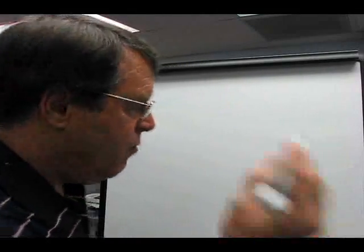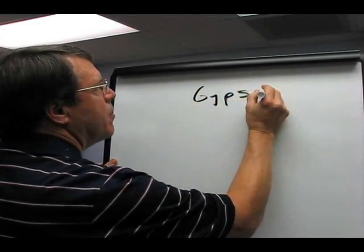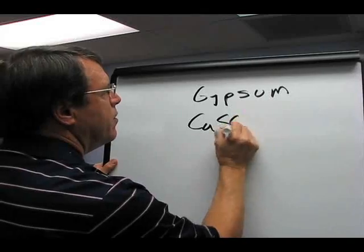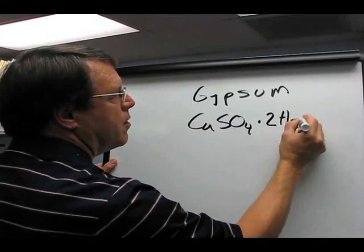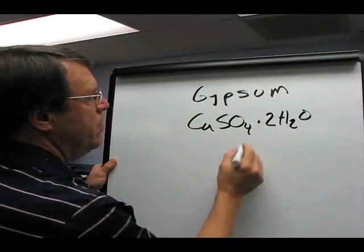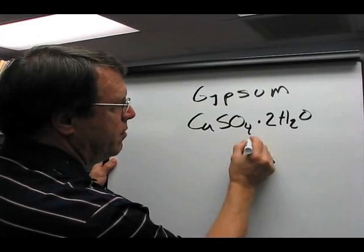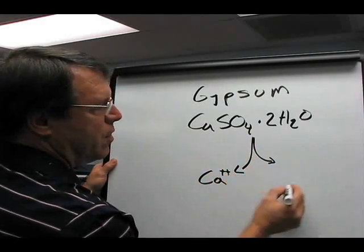Today I want to talk about some of the work we did with gypsum and calcium sulfate anhydrite. There is a report linked to this update for you to look at as well. Gypsum is calcium sulfate with two waters of hydration, so this molecule is hydrated. When you put it into water, it will ionize into calcium plus sulfate.